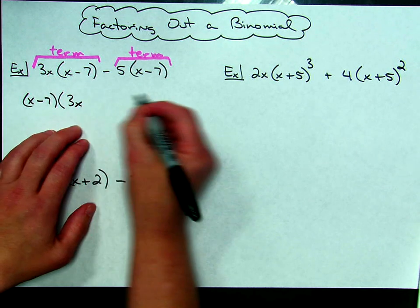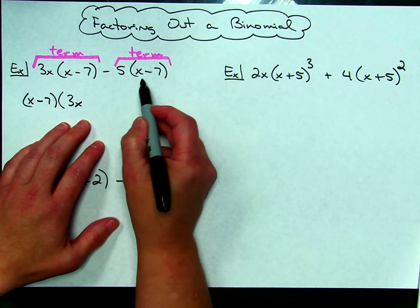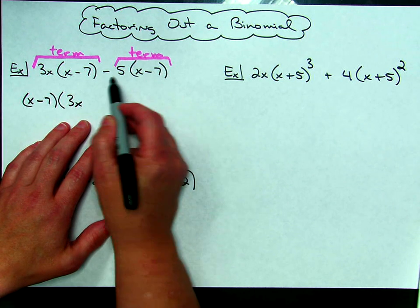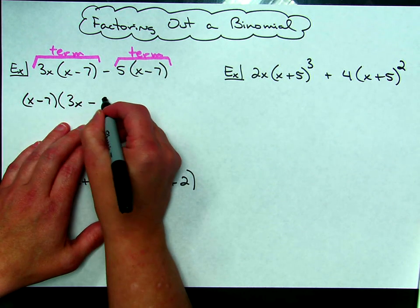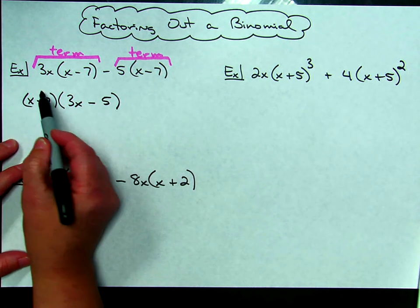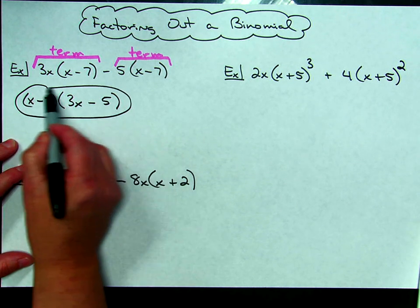In the second term, when I take out the binomial x minus 7, I am left with a minus 5. So factoring out a binomial can look as simple as that.